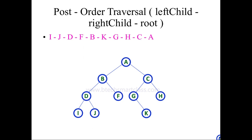Then you have to visit the root node B. Once you visit the root node B, you have to visit the right child of the root A. The right child of the root A — C is a root node for G and H. Again, you have to visit the left child of C, then it will be G. G doesn't have any left child, so you have to visit K. K will be marked as visited. Once you visit K, then the root node will be visited. The root node of K is G.